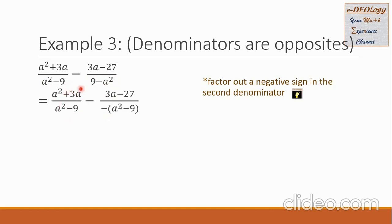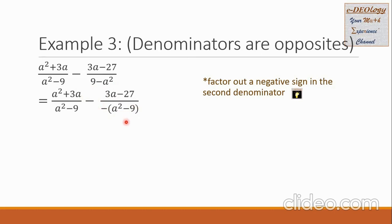So what happens is: we copy the first rational expression, then the minus sign along with the numerator, but the second denominator becomes minus of the binomial a squared minus 9. Let us verify: if we apply the negative sign inside the grouping symbol, the sign of the terms will change. The a squared times the negative sign gives negative a squared, and the negative times negative 9 gives back positive 9. So the factoring is correct.